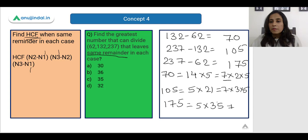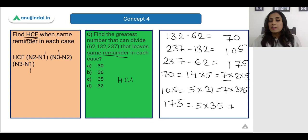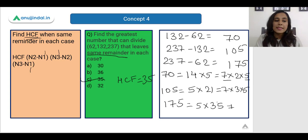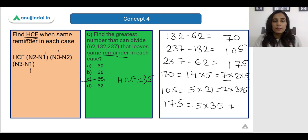We find the HCF of 70, 105, and 175. We can see that 7 × 5 = 35 is the HCF. So the HCF comes out as 35 and the correct answer is option C.